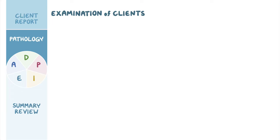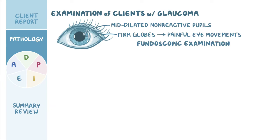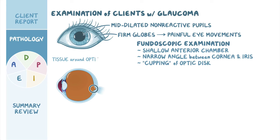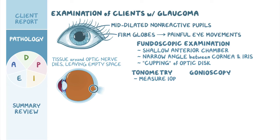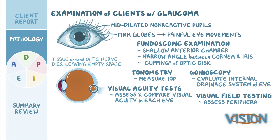Examination of clients with glaucoma typically reveals mid-dilated, non-reactive pupils and firm globes, often associated with painful eye movements. The diagnosis proceeds with a fundoscopic examination, which usually reveals a shallow anterior chamber and a narrow angle between cornea and iris. It can also reveal cupping of the optic disc, which occurs when the tissue around the optic nerve dies, leaving behind an empty space resembling a cup. Tonometry can be performed to measure intraocular pressure, gonioscopy to evaluate the internal drainage system, visual acuity tests to assess and compare vision in each eye, and visual field testing to assess peripheral and central vision.